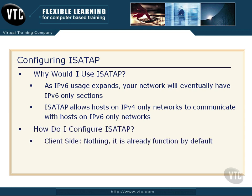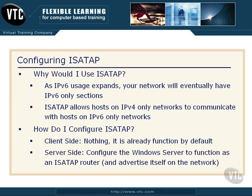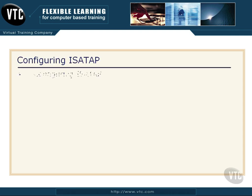So how do we configure this and make it happen? Here's the good news: on the client side, you don't have to do anything — it's already a function working by default. On the server side, you're going to have to do some configuration. You'll need to tell your Windows Server to function as an ISATAP router and then advertise itself on the network so that traffic can figure out where to go, clients know where to send their IPv6 traffic, and so on.